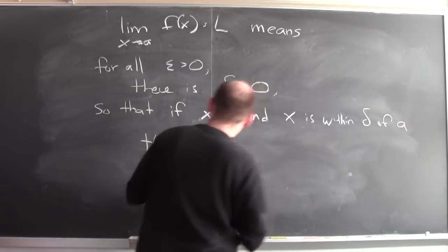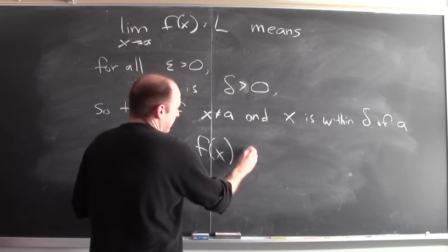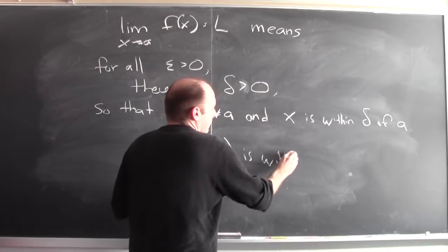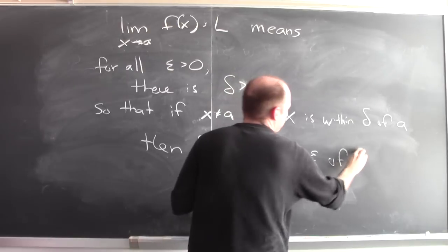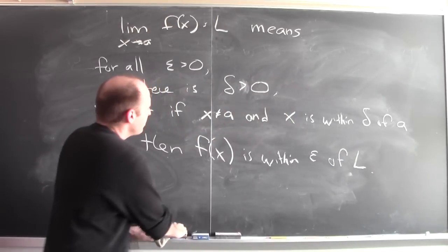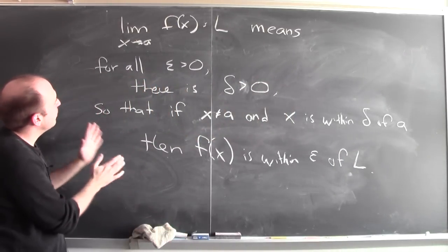So I'll rewrite that as that. Here we go. Then f of x is within epsilon of L. So I think when you write it like this, it makes a little bit more sense.